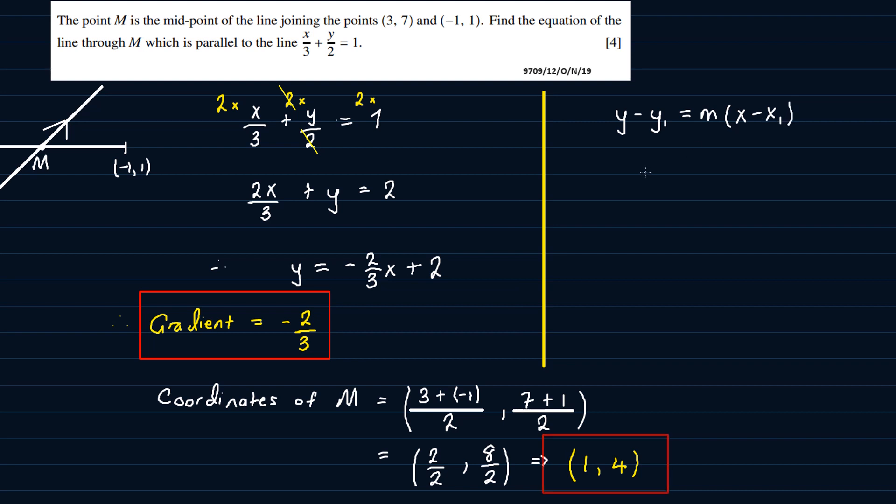So we'll be using (1, 4) for the point. So we have y - 4 = -2/3(x - 1).